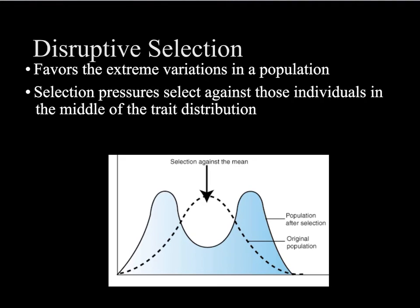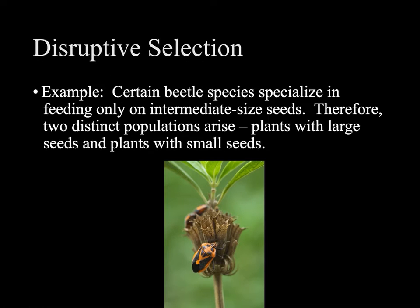A third type, disruptive selection, is when the extremes are favored and individuals in the middle face selective pressures against them — the opposite of stabilizing selection. An example would be beetles that only eat intermediate-sized seeds. Plants that produce large seeds are more likely to reproduce and pass on large seeds, and plants with small seeds similarly reproduce small-seeded plants, so plants with medium-sized seeds become fewer.